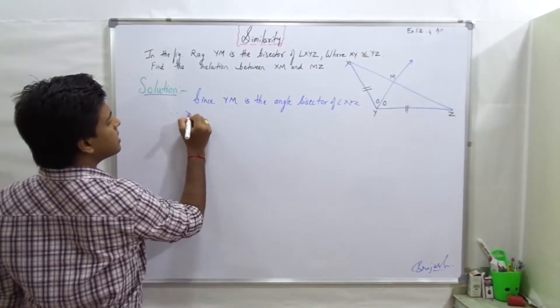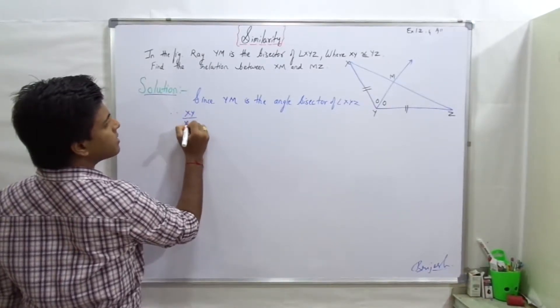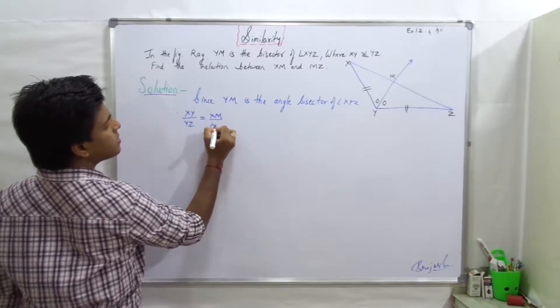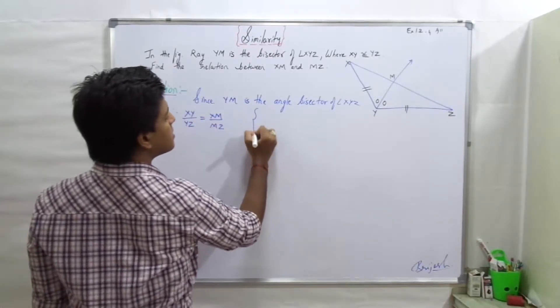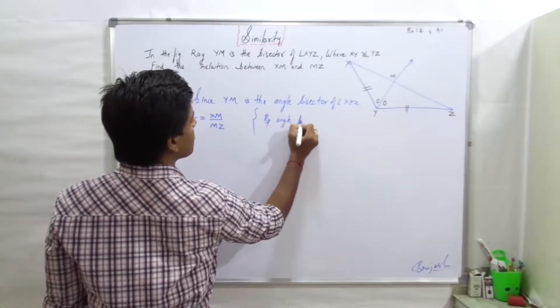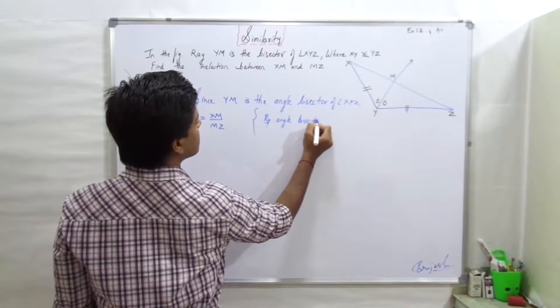XY upon YZ equals XM upon MZ by angle bisector theorem.